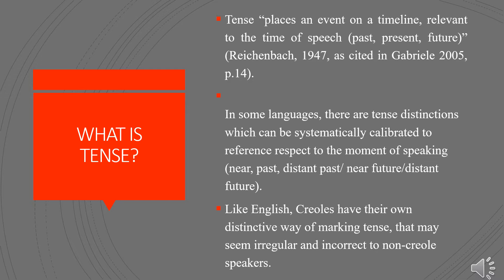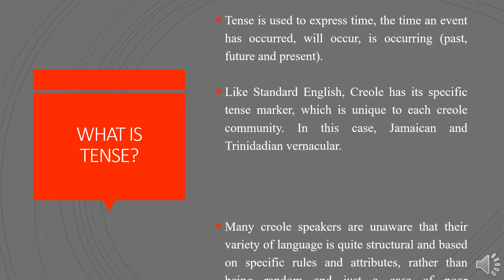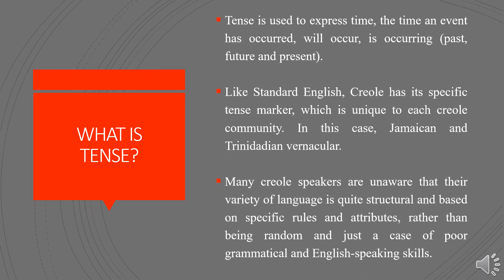Like English, Creoles have their own distinctive way of marking tense that may seem irregular and incorrect to non-Creole speakers. So tense is used to express time — the time an event has occurred, will occur, and is occurring: past, present, and future.